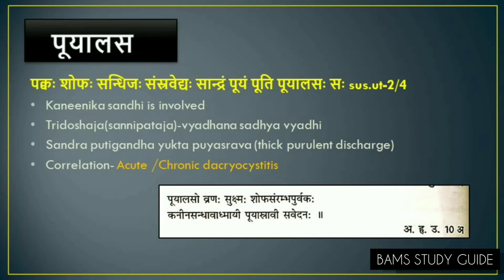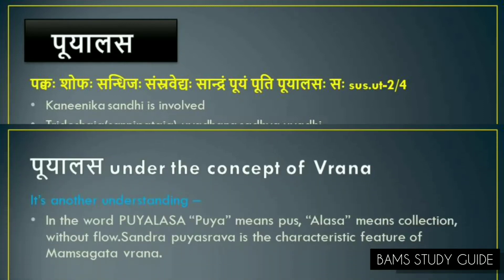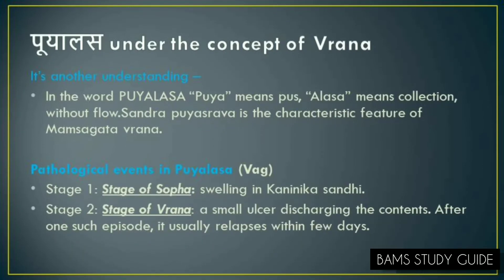The Sandhi involved is Kaninika Sandhi, and it is characterized by Sandhra Pooti Gantayukta Pooya Shrava. It is a Tridoshaja Vyadana Sadhya Vyadhi. It can be correlated to acute or chronic Dacryocystitis. Though all the Tridoshas are vitiated, Pitta dominates the disease and it involves Mamsa and Rakta.